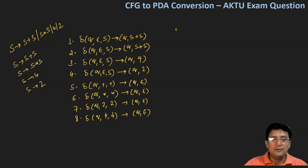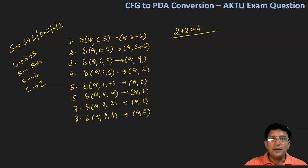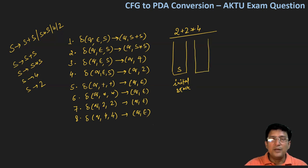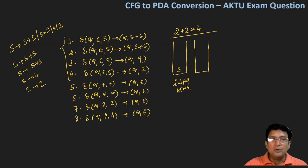माली लेते हैं कि हमें एक string दी है जो कि 2 plus 2 multiplied with 4 है, और हमें इस string को PDA से accept कराना है. चूँकि हमने PDA के transitions बना लिए हैं, और हम ऐसा PDA बना रहे हैं जिसमें acceptance at the end will be through the empty stack. पहले stack लेखें और इस stack में top पे S लिखें — यह मेरा initial stack है जिसमें stack के top पे S है. अब stack का top S है, जो कि non-terminal है, इसलिए rules 1 to 4 applicable हैं. यह non-deterministic PDA है.